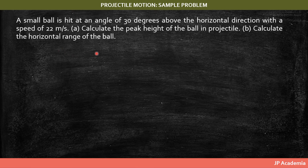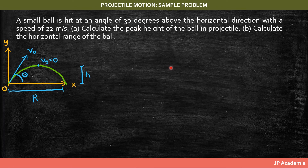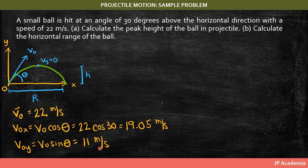Let's answer this problem to better understand projectile motion. A small ball is hit at an angle of 30 degrees above the horizontal with a speed of 22 meters per second. Part A asks us to calculate the peak height of the ball, and Part B asks for the horizontal range. Note that at the peak height, v sub y equals zero. We can find the components of the initial velocity: v0x equals 19.05 meters per second, and v0y equals 11 meters per second.